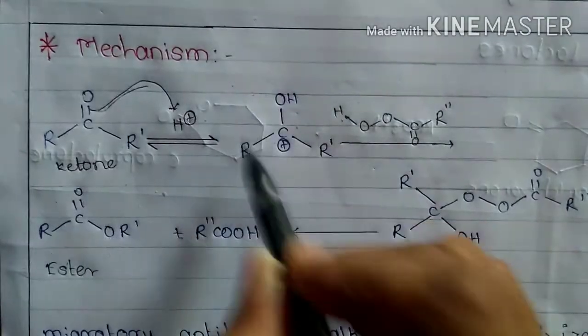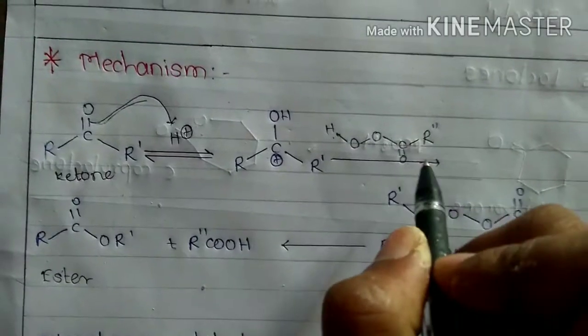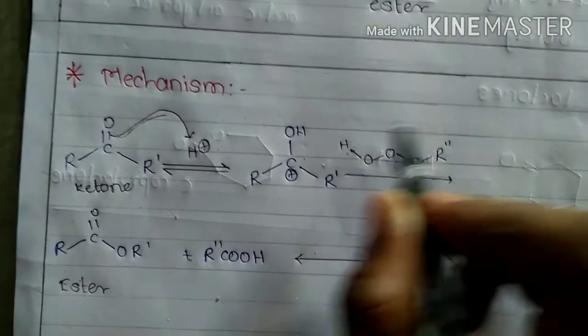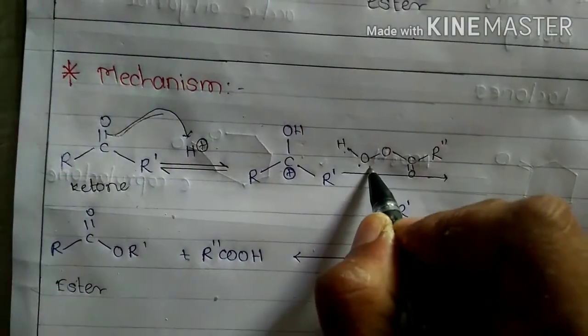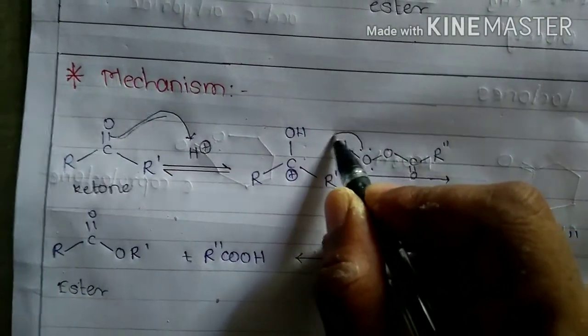So here is the formation of carbocation, here is the formation of OH. Then second molecule of peracid attacks on the carbocation like this.